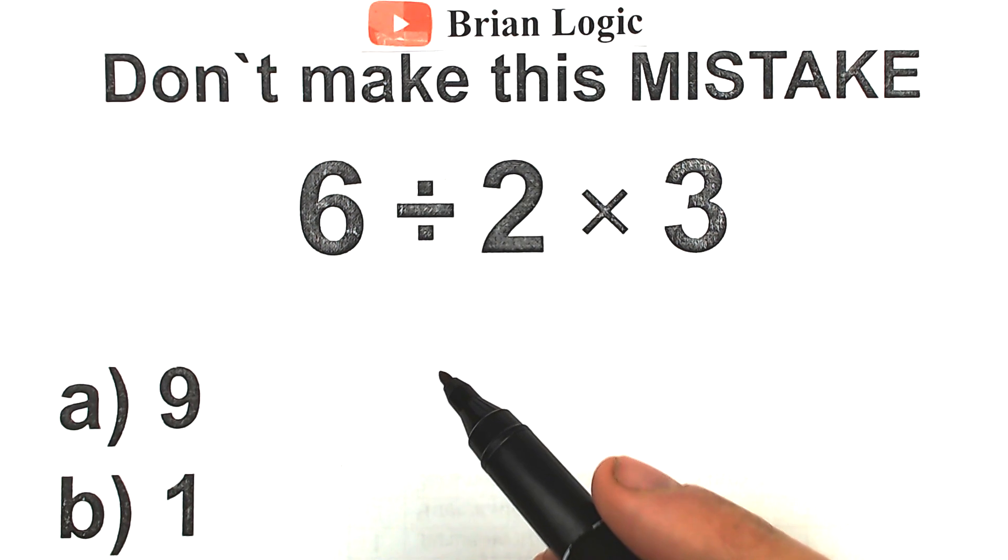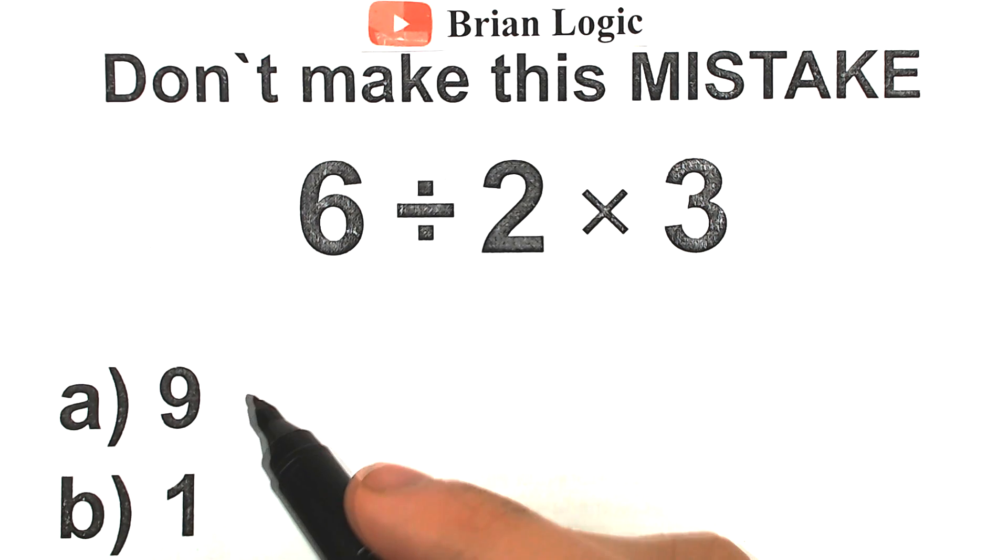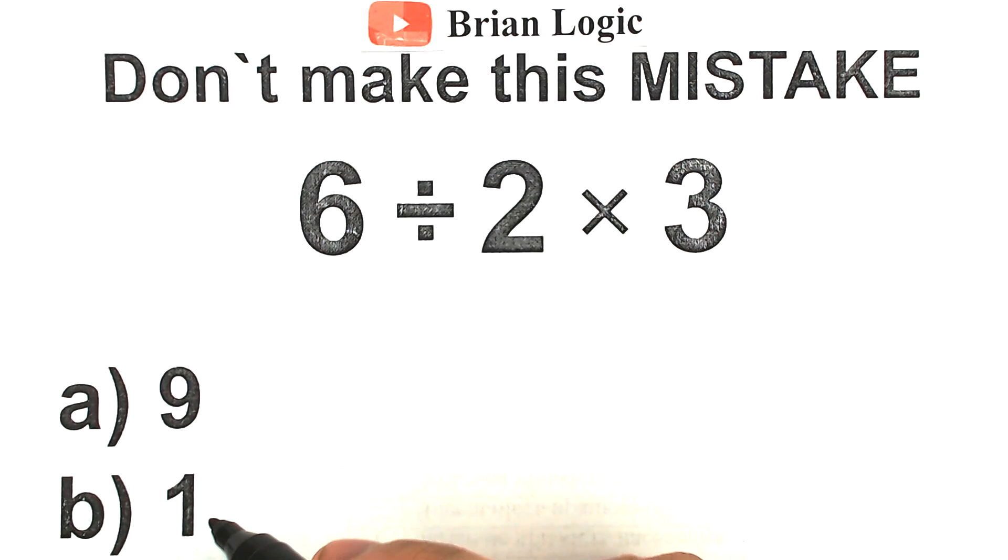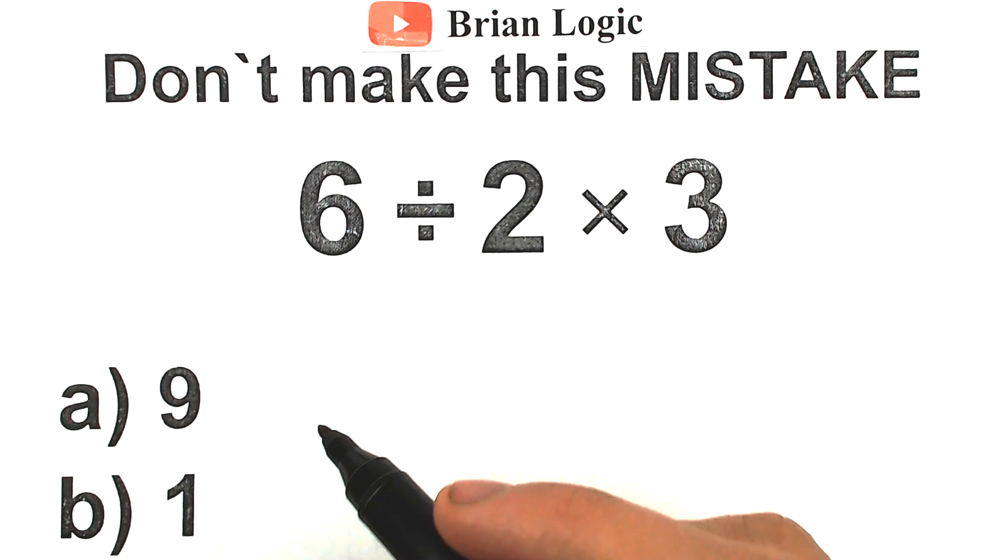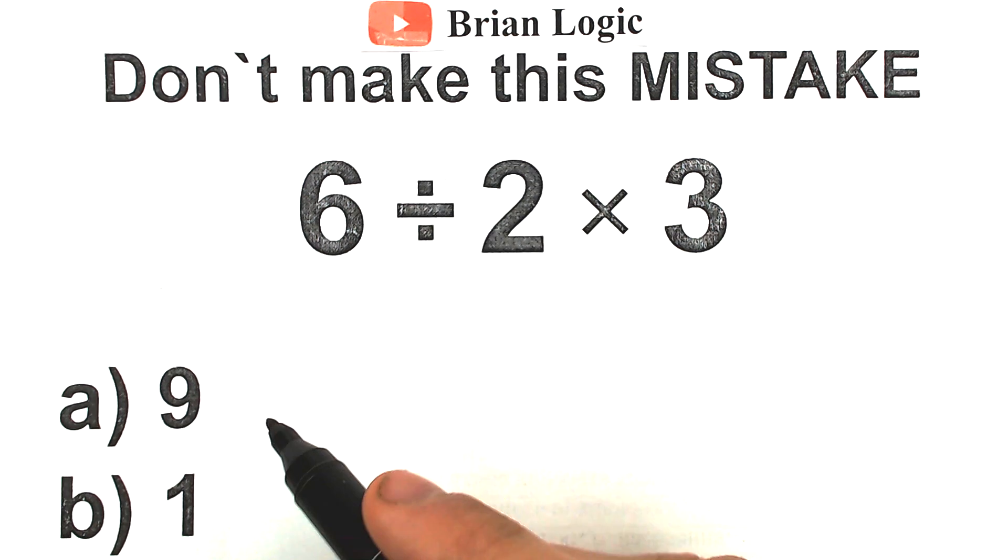But a lot of people are arguing about the correct answer. One part of people tell that the correct answer is 9, another part of people tell that the correct answer is 1, and it turns into a big argument. So right now many people are going to get this problem incorrect. If you could do this without a calculator, put your answer into the comment section. We have two options, option A, option B.